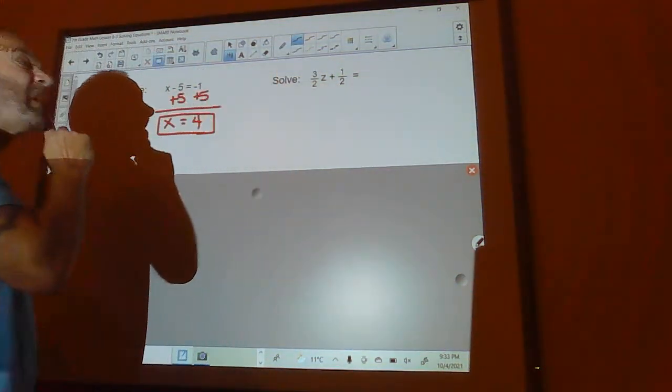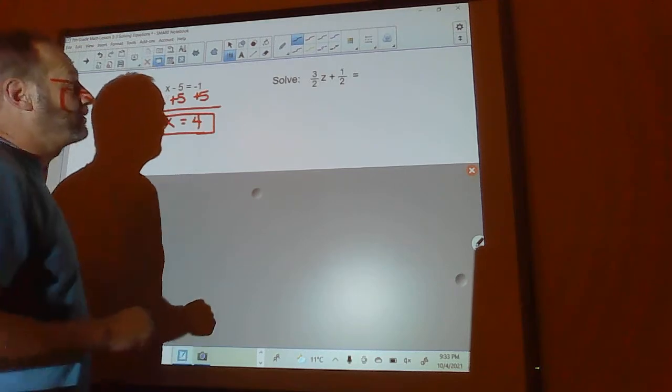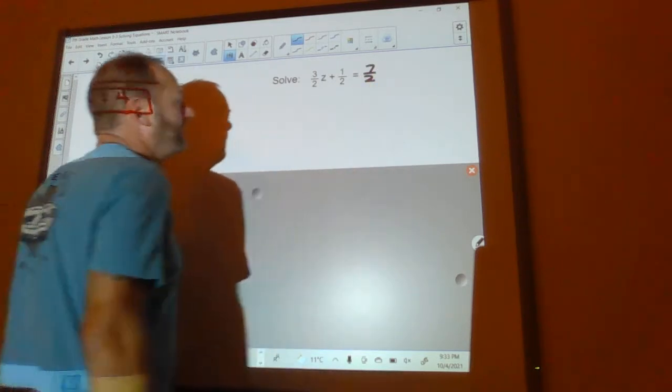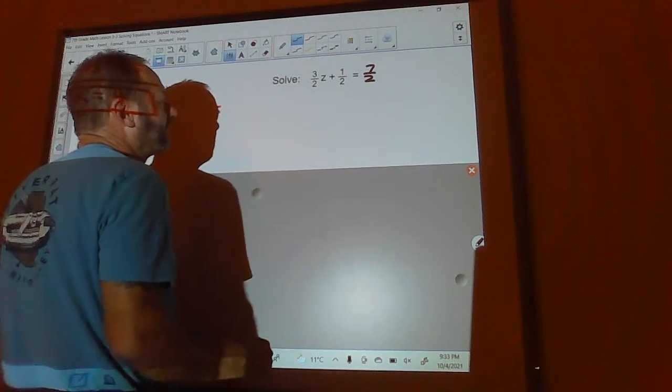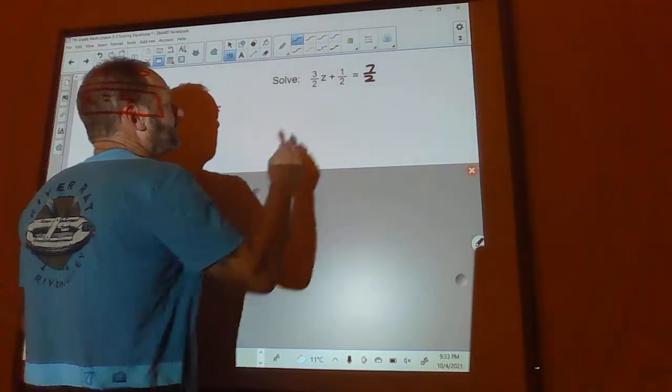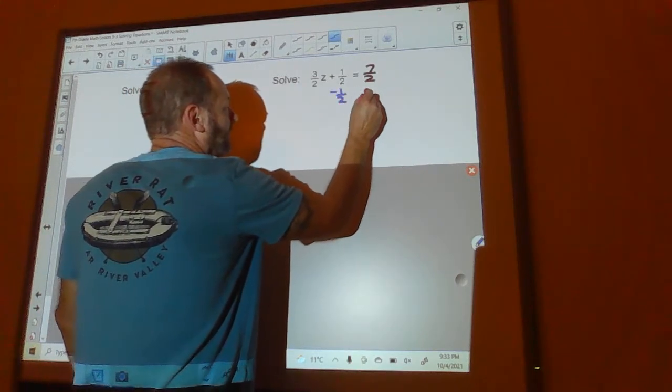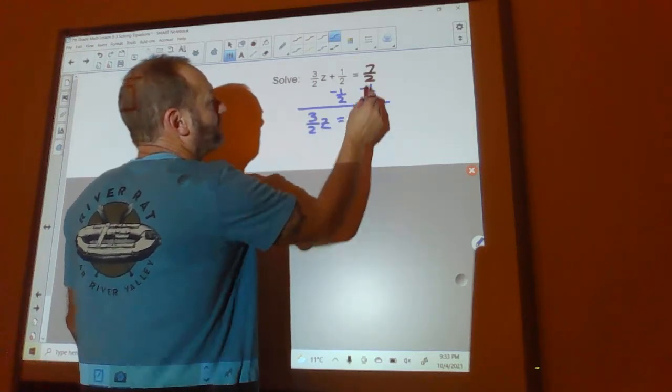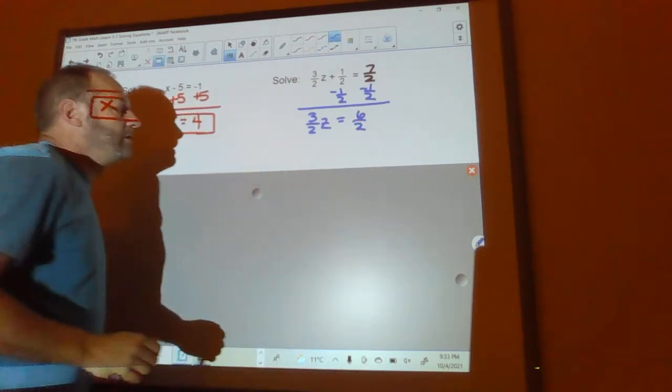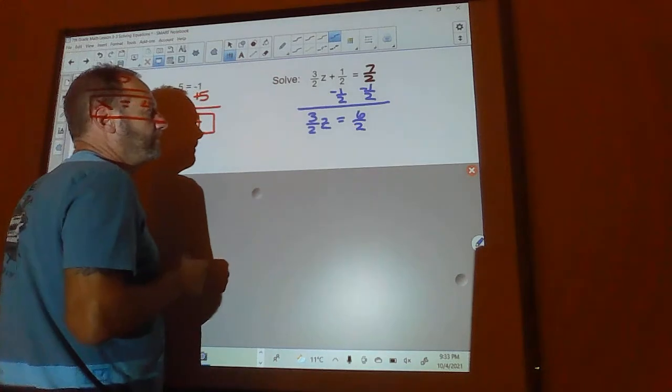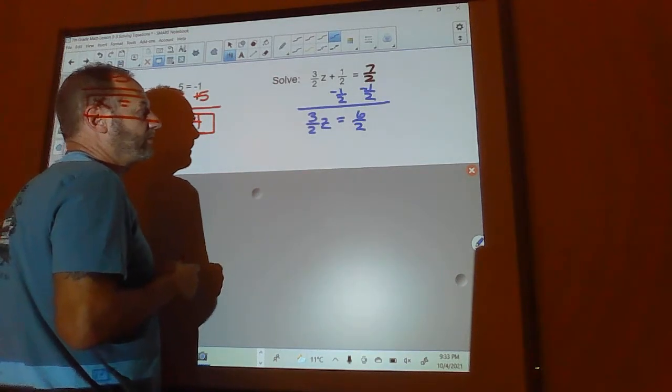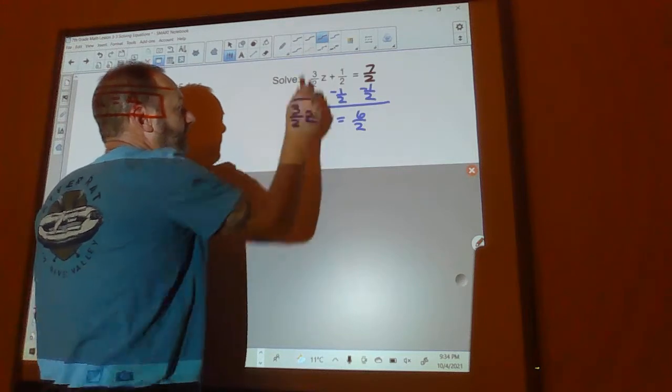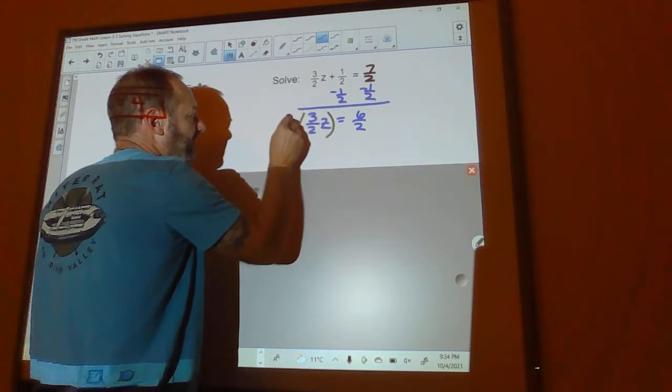This problem right here is a problem because it doesn't have, it's not an equation. It doesn't have something that it's equal to. So let's put a 7 halves over here. Now it's an equation. So there's a couple ways I can do this. I can subtract the 1 half from both sides. And so I get 3 halves z equals 6 halves. Now I could reduce this to 3, but I guess it really wouldn't make this too much more difficult. I'm just going to leave it like that, though, because my next step is to multiply by the reciprocal of 3 halves. So I'm going to multiply both sides of this by 2 thirds.